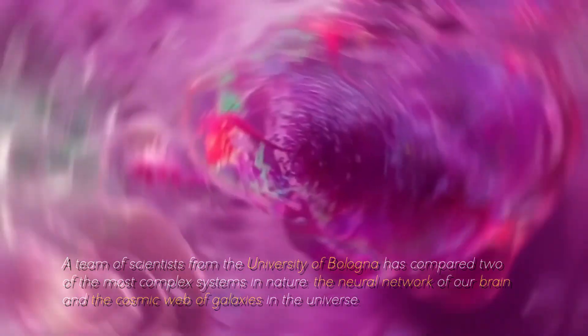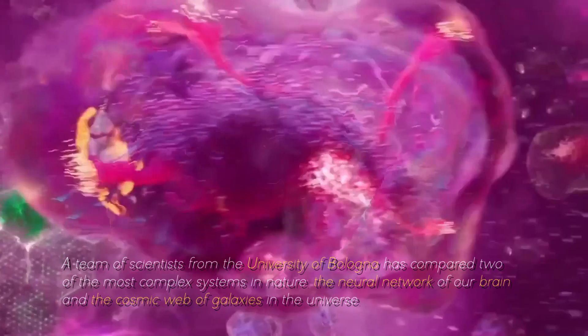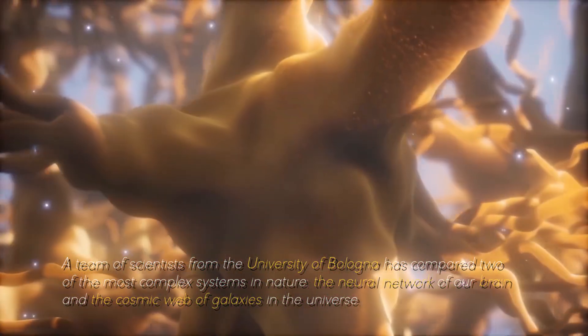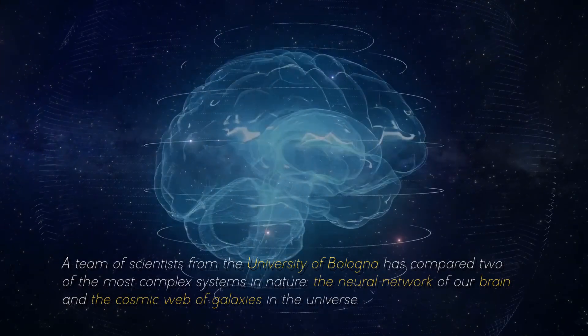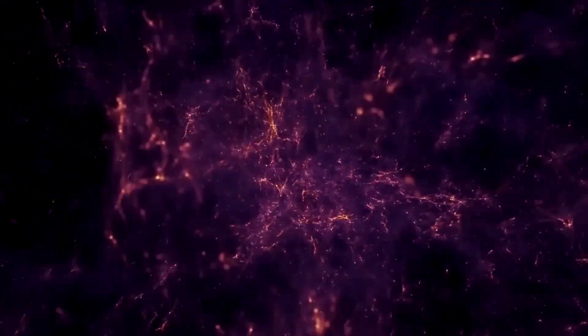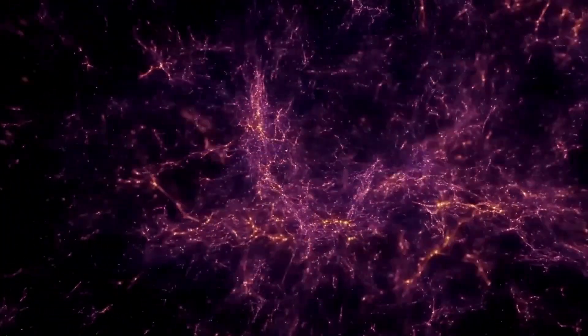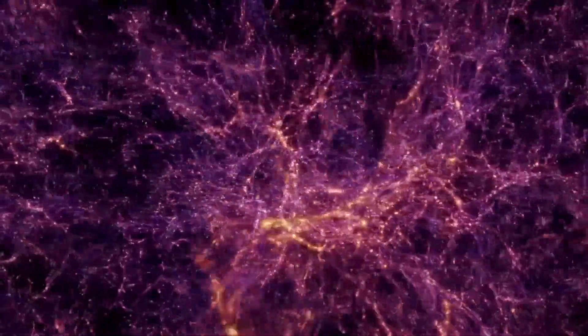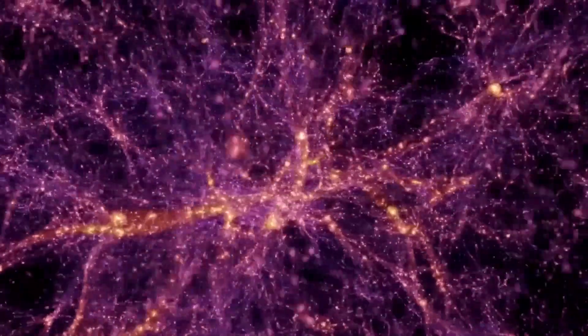A team of scientists from the University of Bologna has compared two of the most complex systems in nature, the neural network of our brain and the cosmic web of galaxies in the universe. What did they discover? That they are incredibly similar. And not just as they look if we compare a human neuron with a cluster of galaxies. There's more.